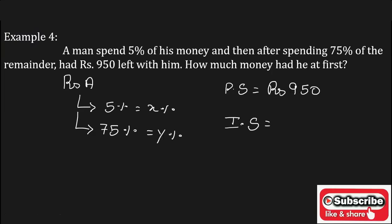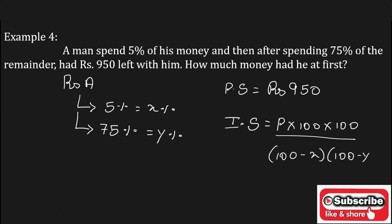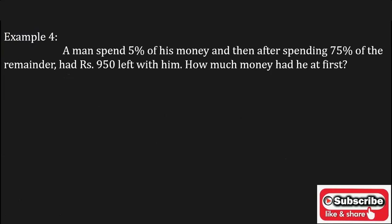To find the initial amount, we will use the formula: P × 100 × 100 upon (100 minus X) × (100 minus Y). We use this formula because both times a deduction is made. As we know the values of P, X, and Y, we substitute them into the formula and solve it.